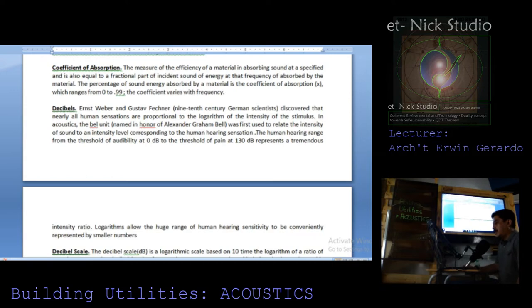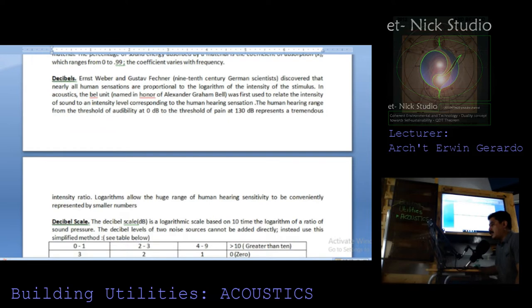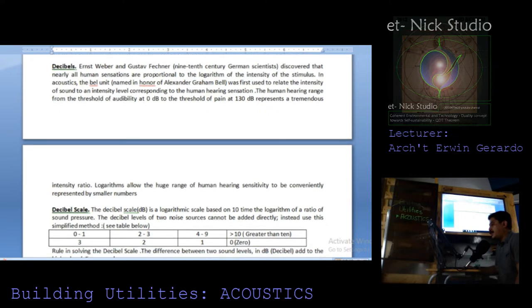Decibels are named after Ernst Weber and Gustav Fechner, 19th century German scientists who discovered that nearly all human sensations are proportional to the logarithm of the intensity of the stimulus. In acoustics, the Bell unit, named in honor of Alexander Graham Bell, was first used to relate the intensity of sound to an intensity level. The human hearing range spans from the threshold of audibility at 0 decibels to the threshold of pain at 130 decibels, representing a tremendous intensity ratio.